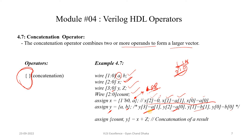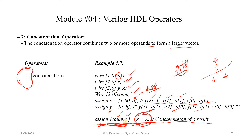An important use of the concatenation operator is assigning values to multiple variables using a single statement. Using an assign statement, we can assign values to both count and Y simultaneously. If Y is 4-bit and count is 3-bit, the combined vector is 7-bit, and the expression X + Z will be extended to 7 bits, with bits [3:0] assigned to Y and bits [6:4] assigned to count.